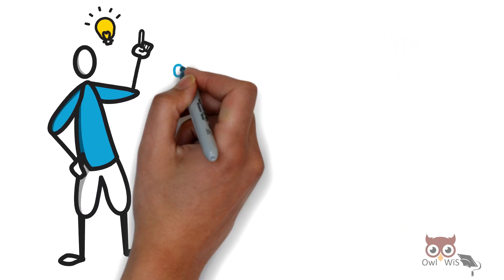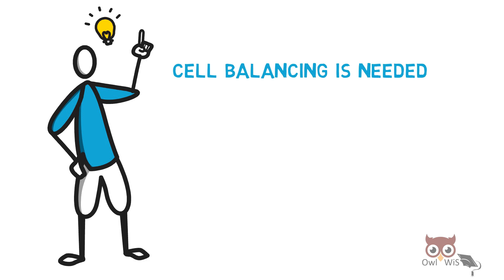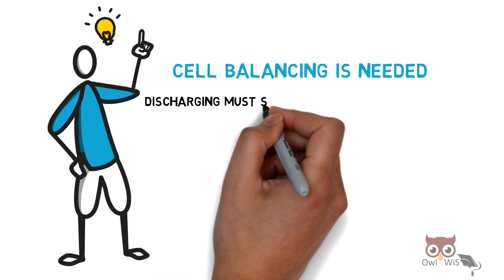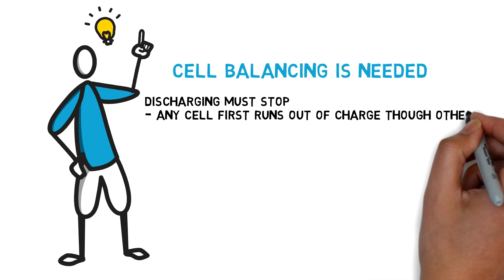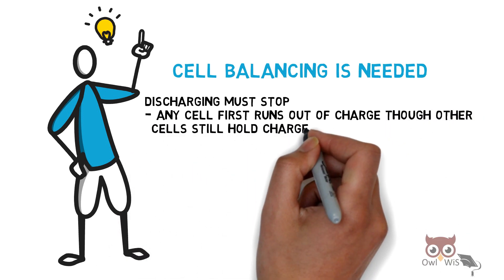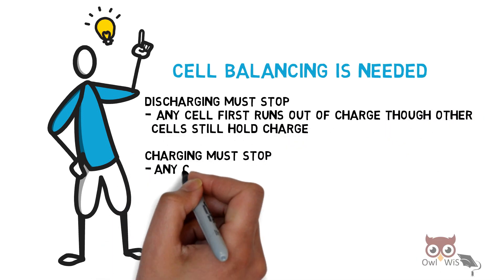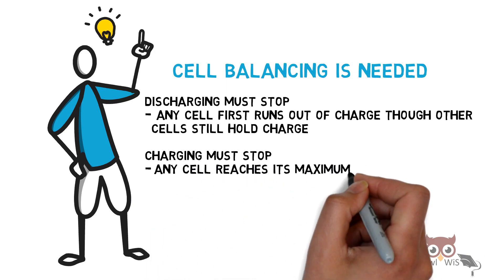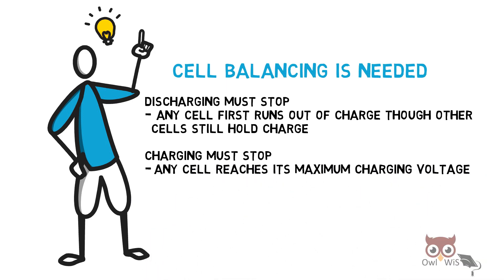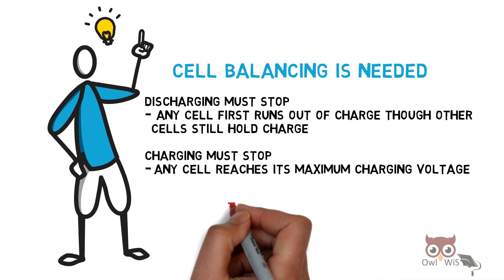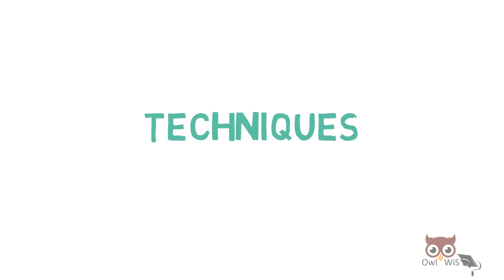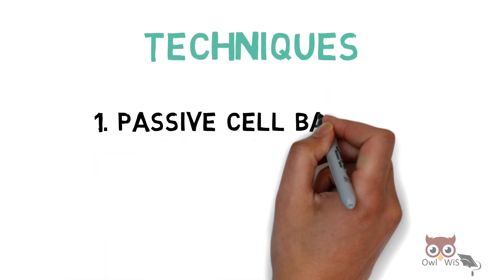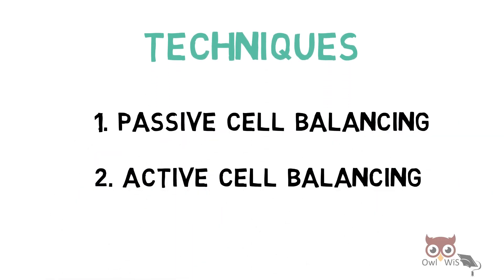Let us understand why cell balancing is needed. Discharging must stop when any cell first runs out of charge, though other cells still hold charge. Similarly, charging must stop when any cell reaches its maximum charging voltage, otherwise it will lead to thermal runaway and can cause catastrophic failures. The techniques used are passive cell balancing and active cell balancing.